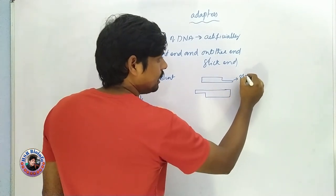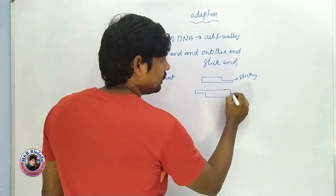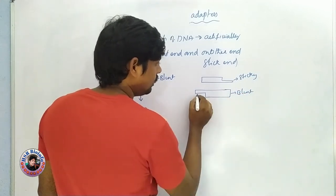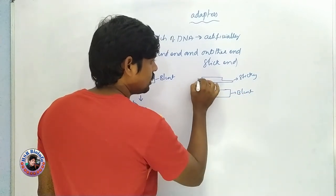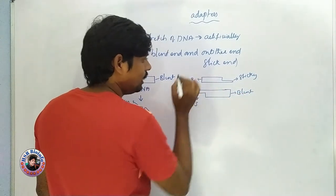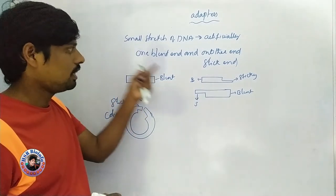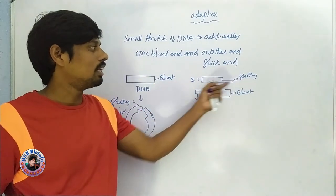This end is called the sticky end, this is called the blunt end. As per the definition, one side is blunt and one side is the sticky end.